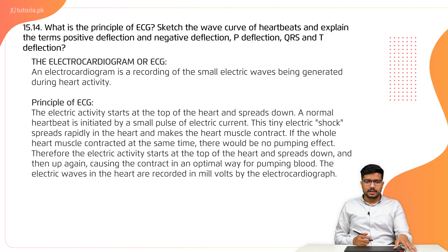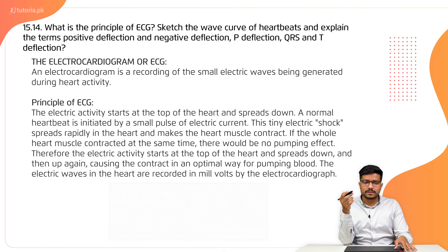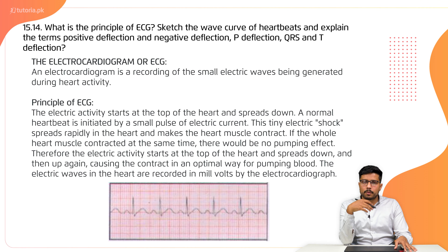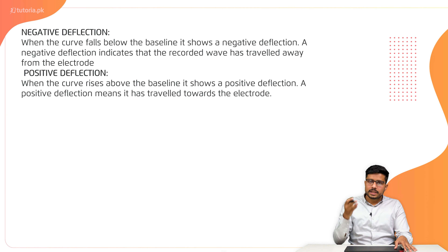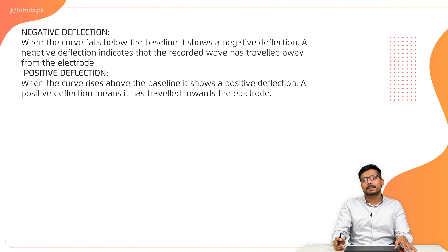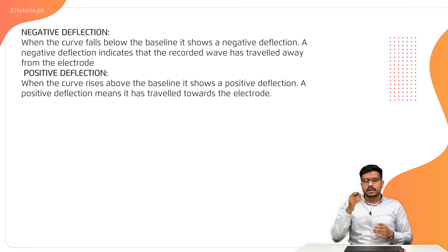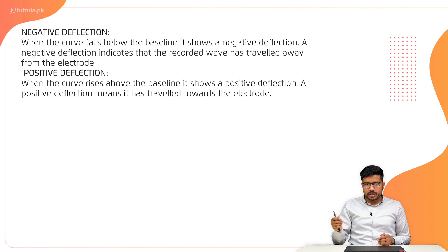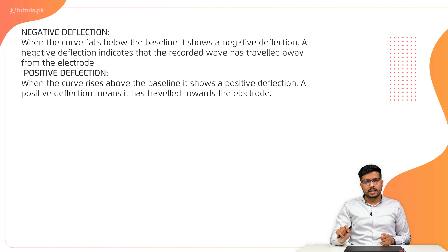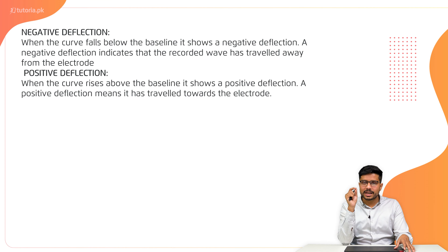If we talk about positive and negative deflection: we have a baseline. Above the baseline is the positive deflection, which means all deflections toward the electrode are positive. Negative deflection is the deflection away from the electrode. The key points are the peak positions of Q, R, S, and T.